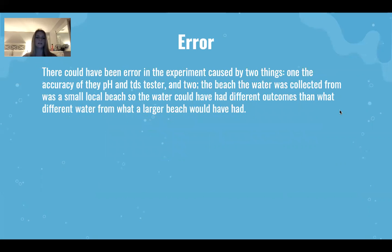There could have been two things that caused error in this experiment. The first was the accuracy of the pH and salinity tester. The second was that the beach where the water was collected from was a small beach, so the water temperature could have been different from that of what a larger beach would have had.